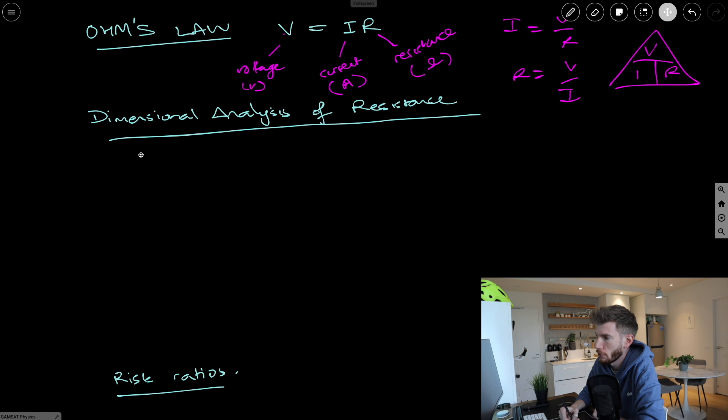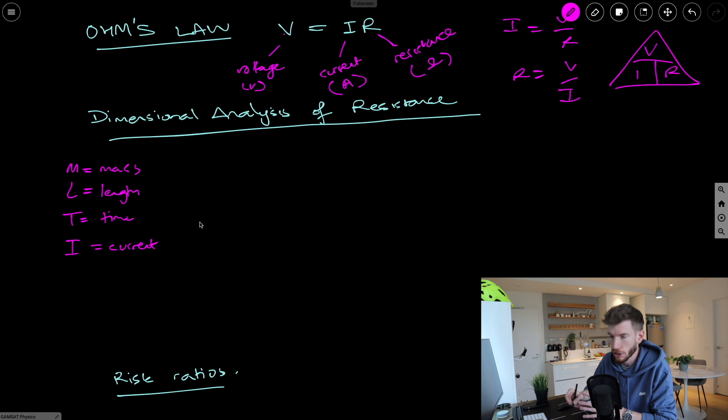So if we were to do dimensional analysis of resistance, which appears to be a relatively popular style of question from ACER, we're just trying to look at the basic dimensions. So we have mass, which is capital M. We have length, which is capital L. Then we have time, which is capital T. And then what we're also going to add in this time is I, which is going to be for current, right, as well as these are the primary dimensions that we can kind of describe every physical value and constant in terms of.